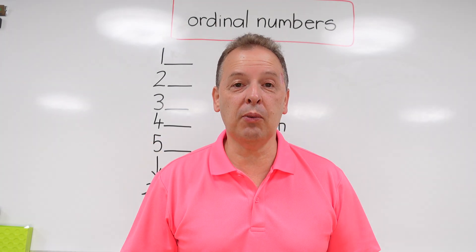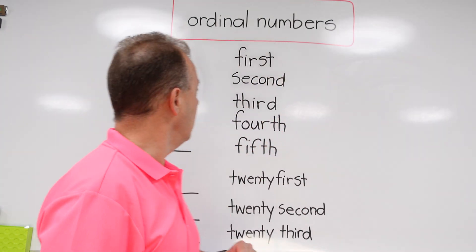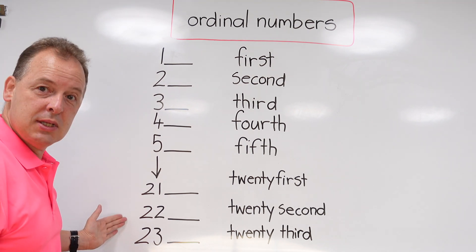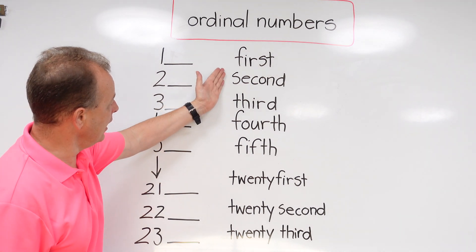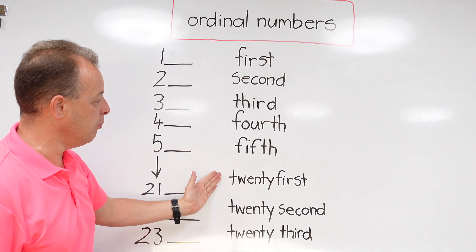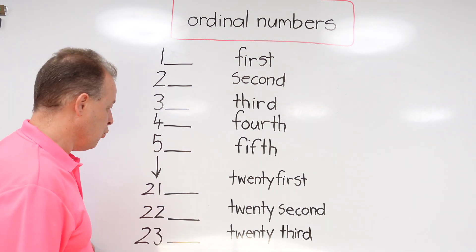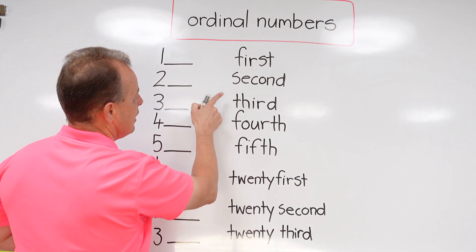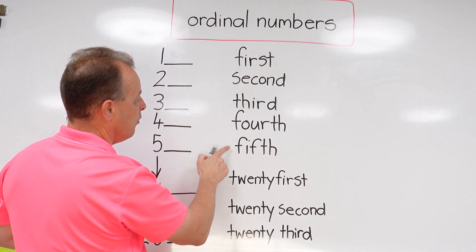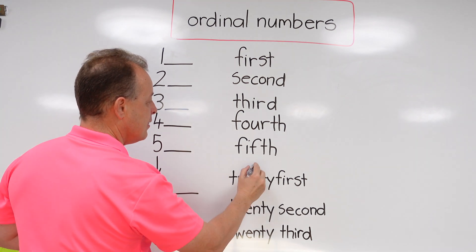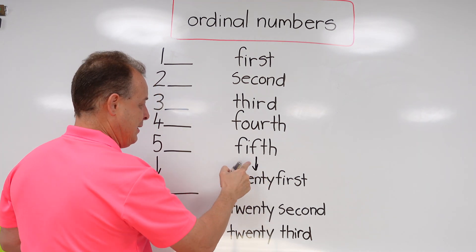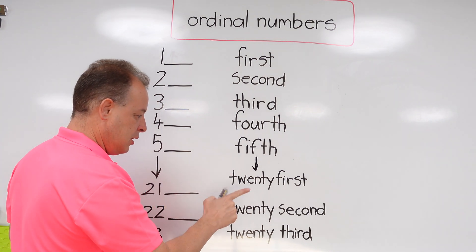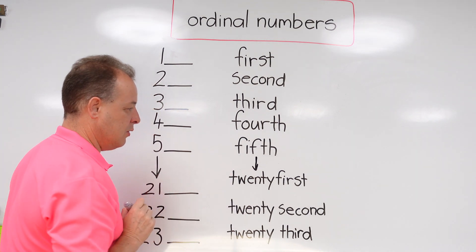Okay everyone, behind me I have the ordinal numbers written as words on the right-hand side. We have first, second, third, fourth, fifth, and then six, seven, eight, nine, all the way down to twenty-first, twenty-second, twenty-third.